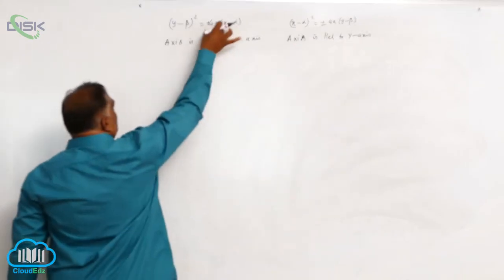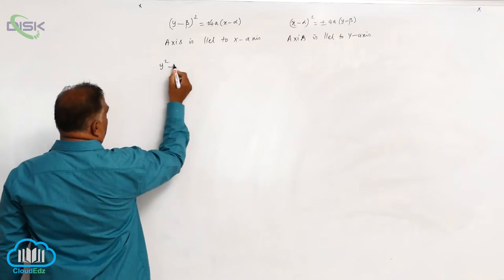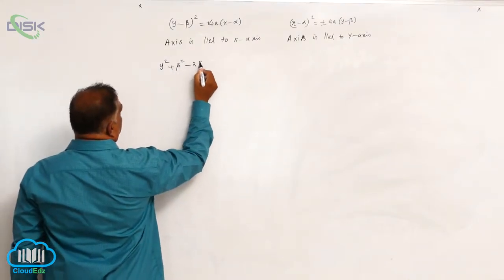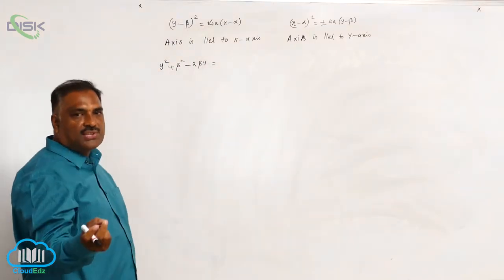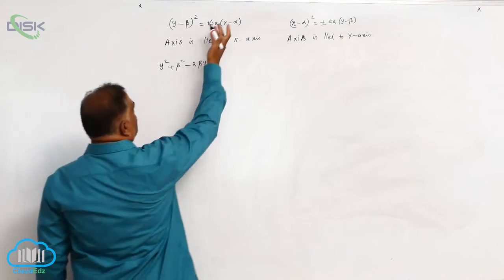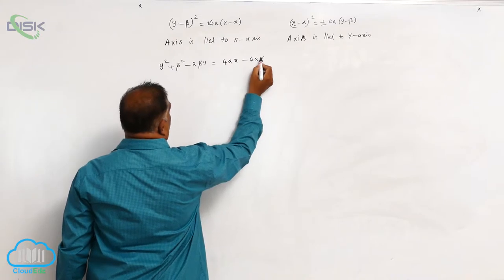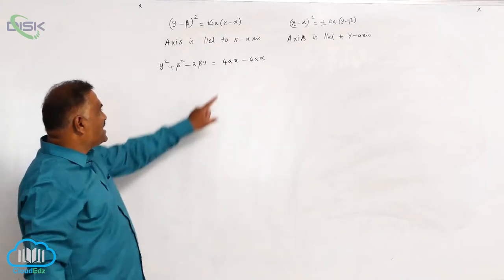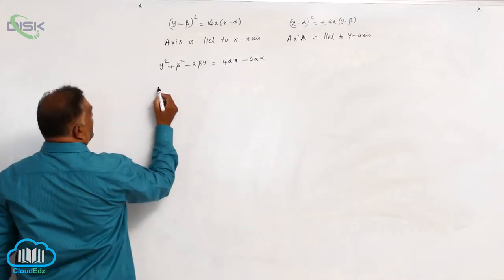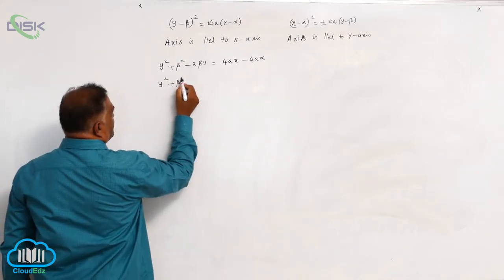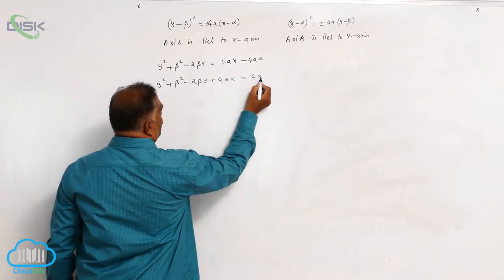You can see very clearly, if you take the first equation and simplify: y² + β² - 2βy = 4ax - 4aα. We can take either the positive or negative sign — it does not make any difference. Let us consider the positive sign. Now, express x in terms of y. Bring 4aα to the left side: y² + β² - 2βy + 4aα = 4ax.